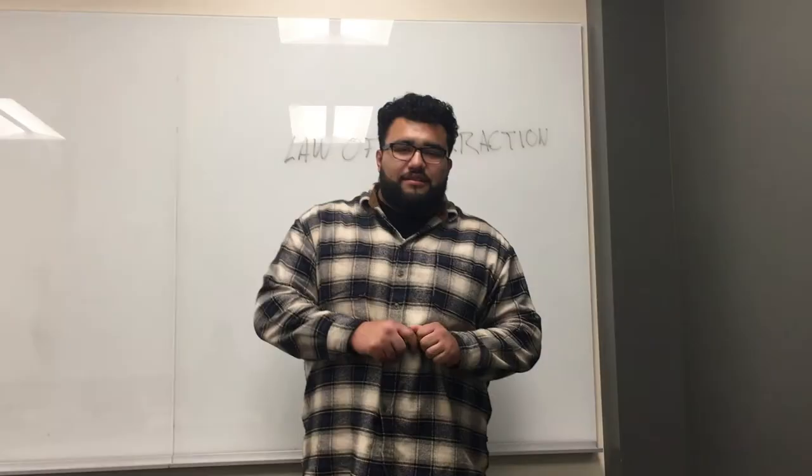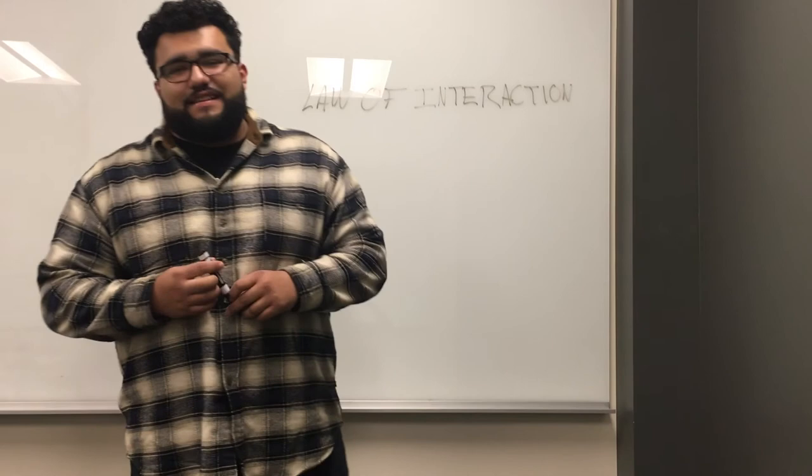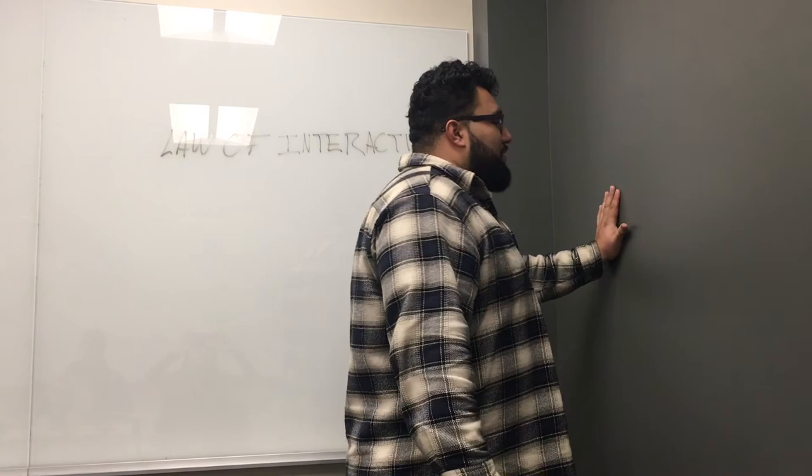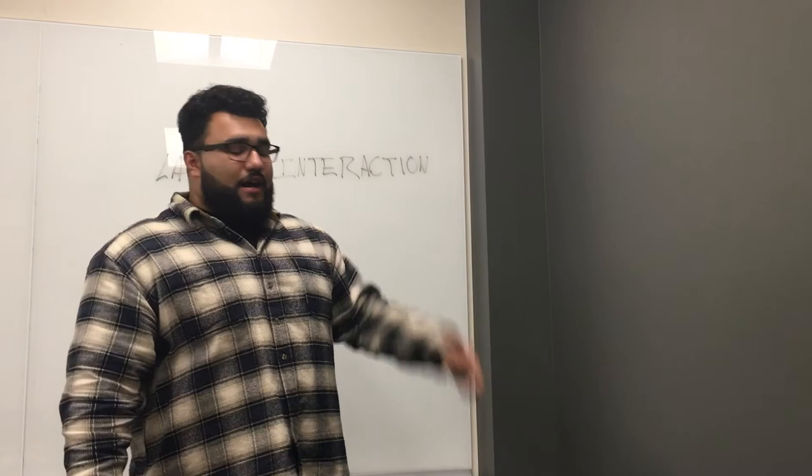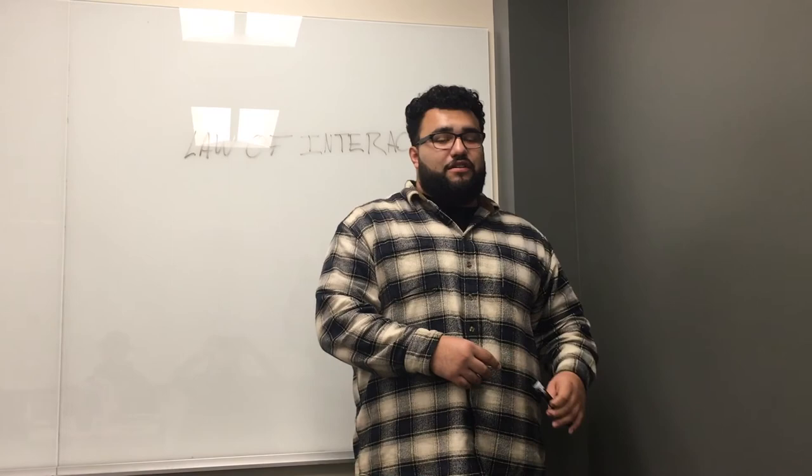The law of interaction states that for every action, there's an equal and opposite reaction. What that means is, for example, right here against the wall — when I apply a force to this wall, that force I'm applying is directly going to be transmitted back to me. For runners, when you take off the starting block, all the force from the push leg being applied to the ground or to the block is reversely applied back into the leg, which makes it go forward.